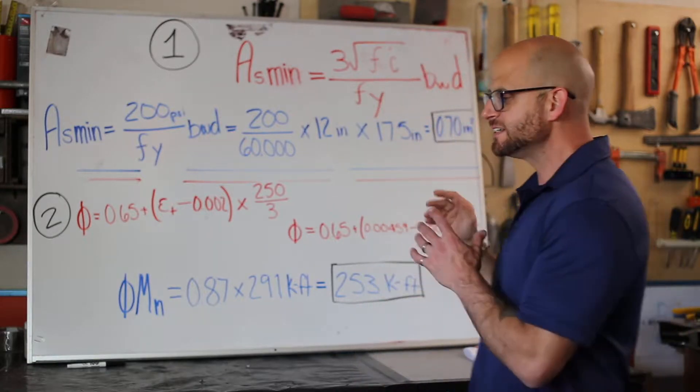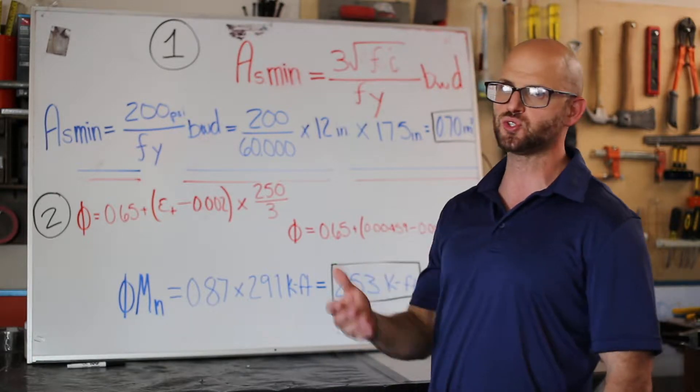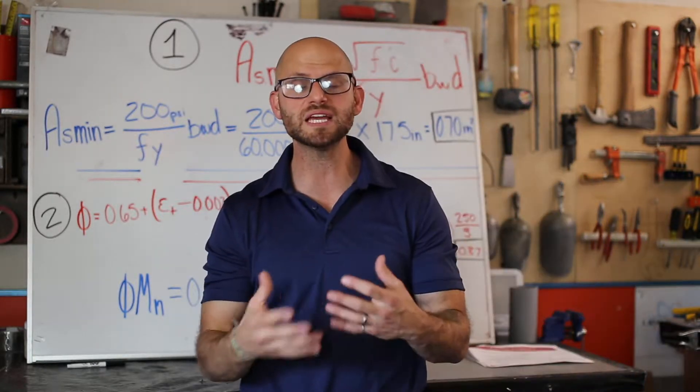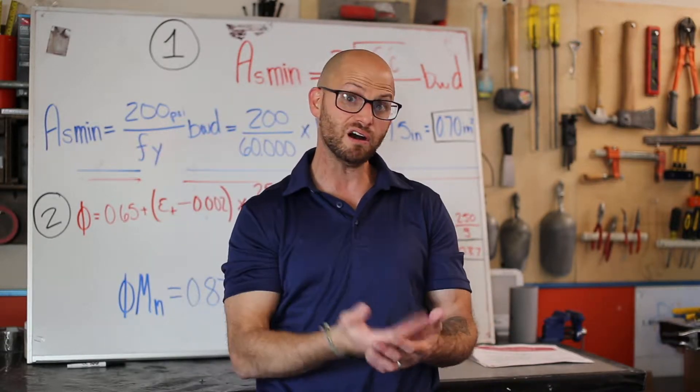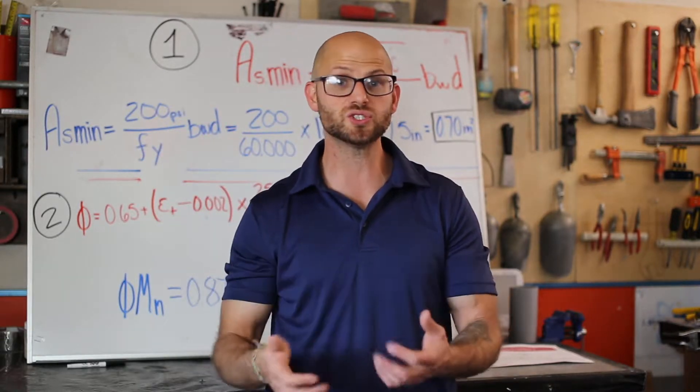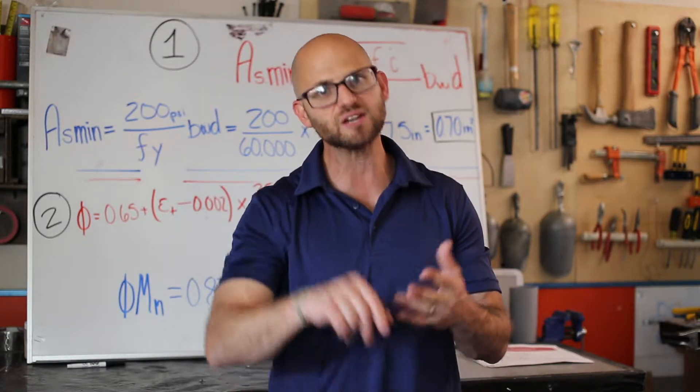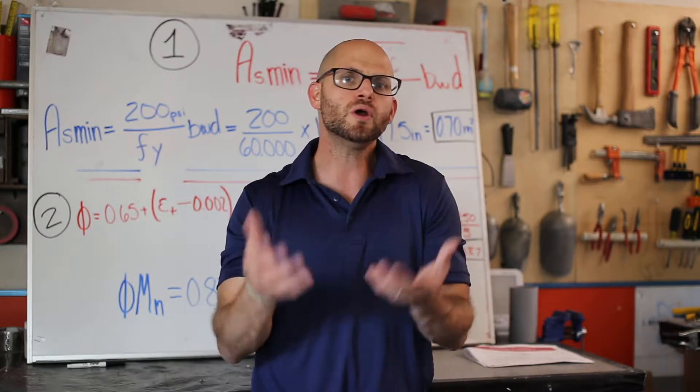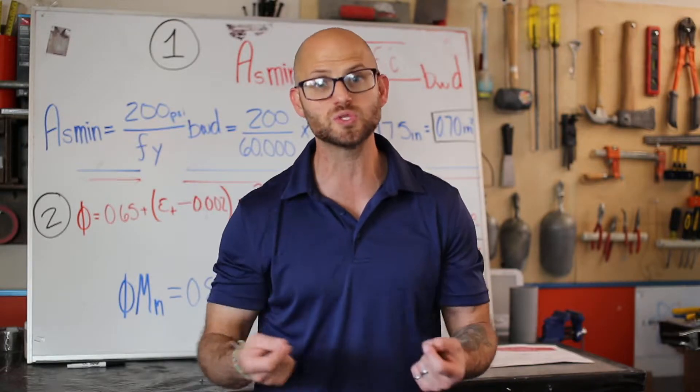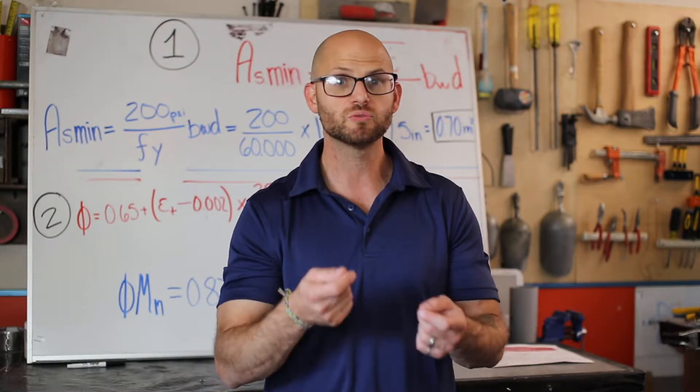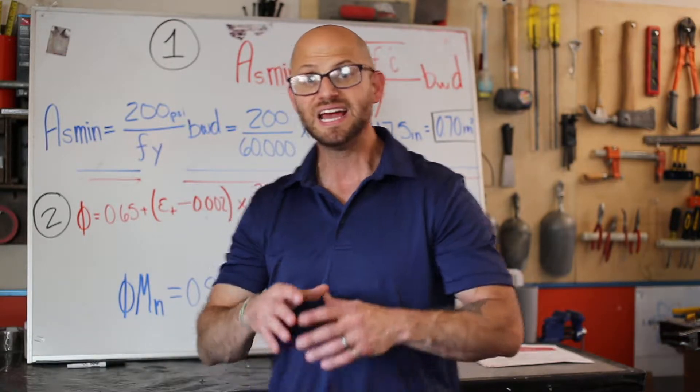The second piece is identifying our strength reduction factor. When we're looking at a concrete beam, there are many things that can cause a reduction in strength, whether it's the concrete that gets placed, the contractor that places it, the steel that goes into it. To take into account those scenarios, we put a strength reduction factor that's based on the geometry of the beam, the amount of steel, and the type of zone that it's in when it fails.